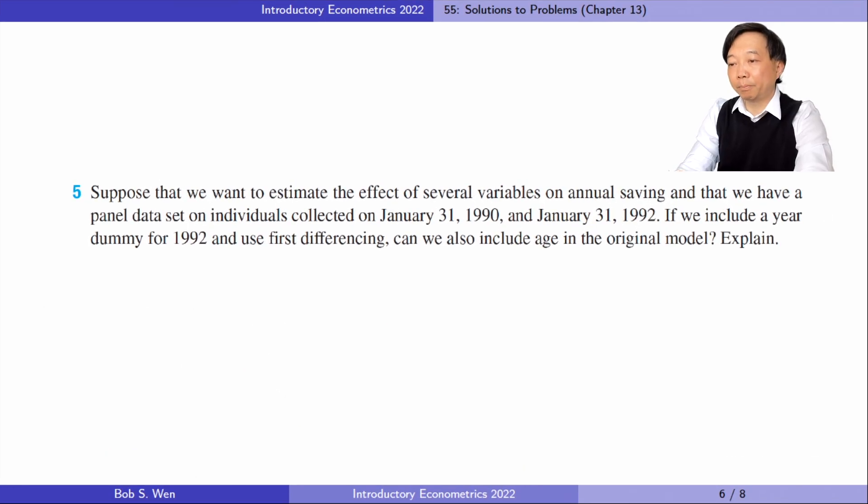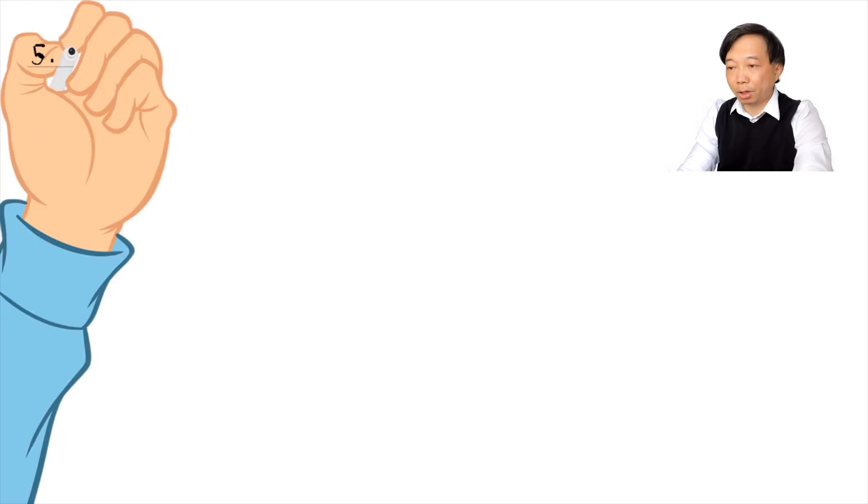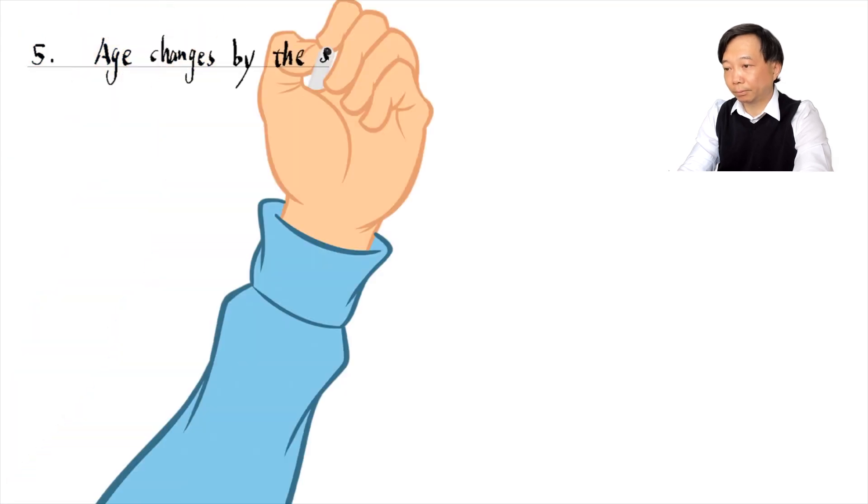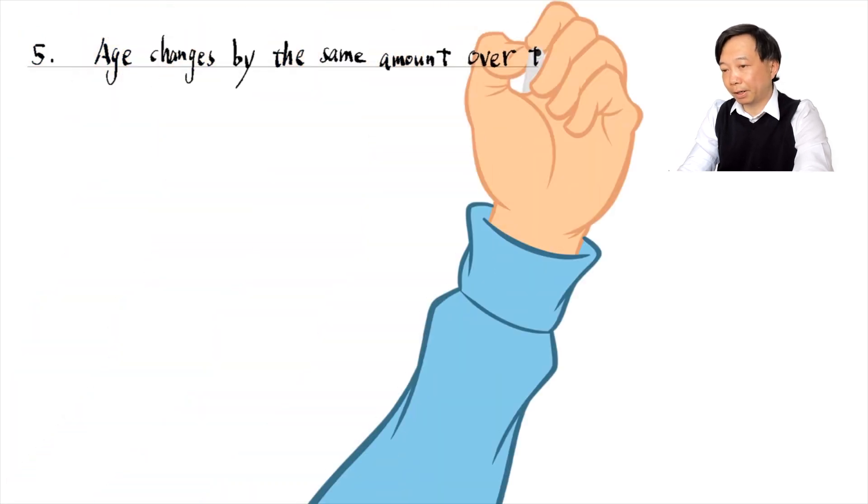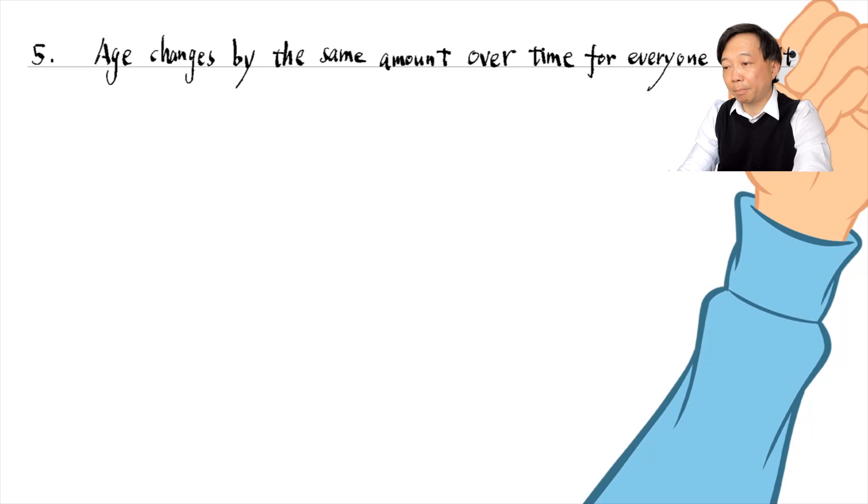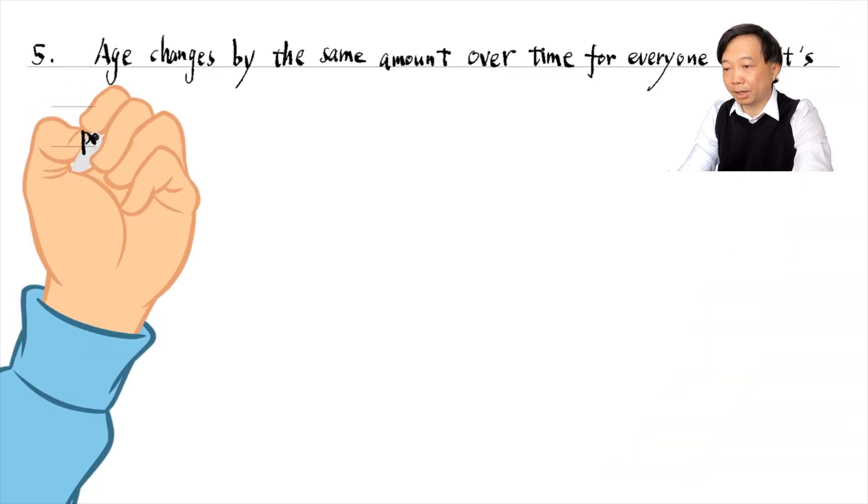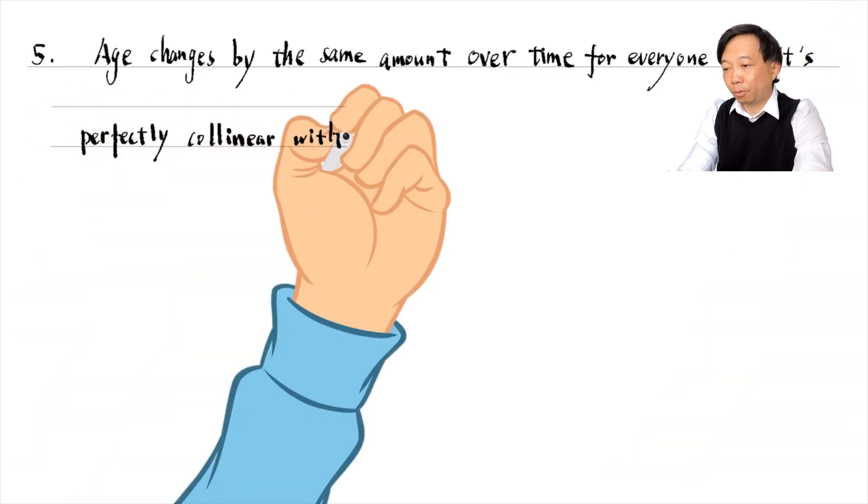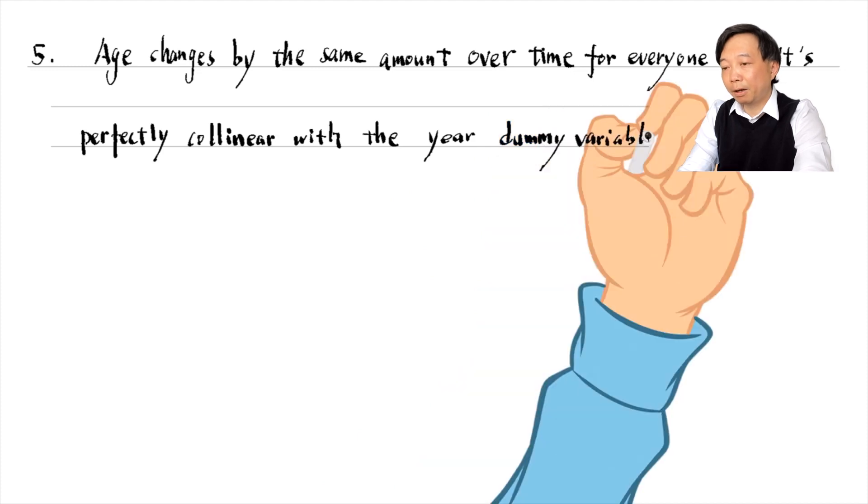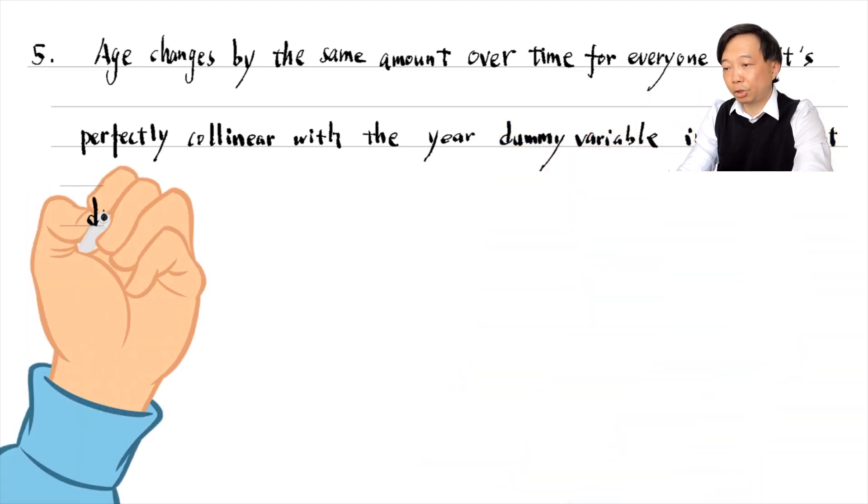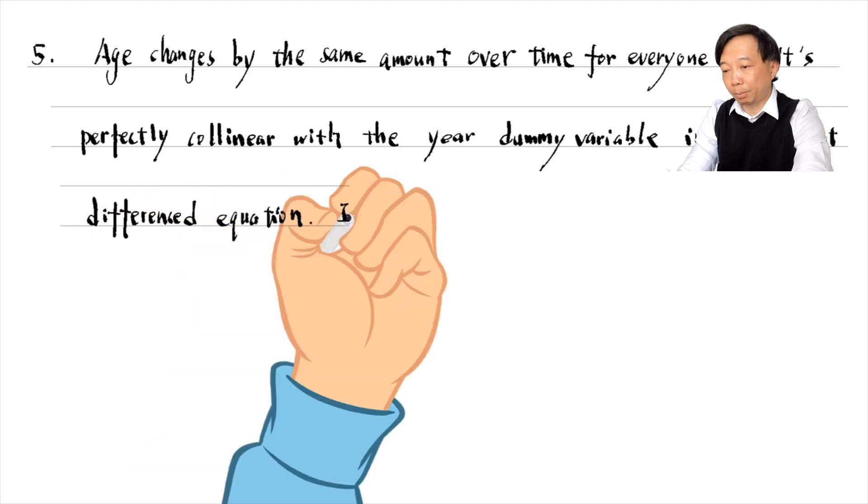Let's do problem 5. Age changes by the same amount over time for everyone, so it is perfectly collinear with the year dummy variable in the first difference equation. It violates the no perfect collinearity assumption. We should drop age from the model.